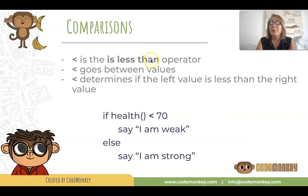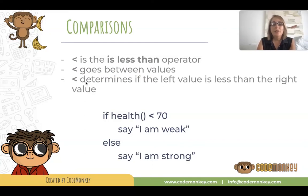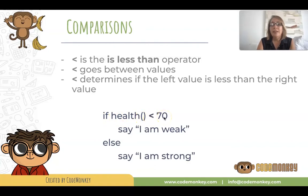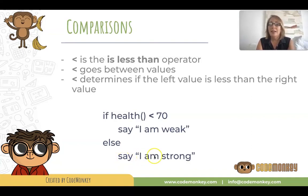Is less than is another comparison operator. It goes between values. The less-than symbol determines if the left value is less than the right value. For example, in an if statement we could have a condition like this: if health is less than 70, it will run the indented code, which in this case says 'I am weak.' Else, if health is greater than or equal to 70, you reach the else and execute the indented code, which says 'I am strong.'